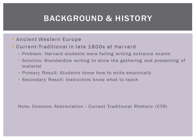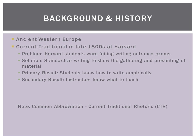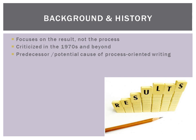While composition theory begins in ancient Western Europe, current traditional theory begins in the late 1800s. It helps to standardize writing, thereby helping instructors know what to teach — so the common five paragraph model emerges. The objective is to produce a finished, effective essay for each student. It was criticized in the 1970s because CTR focuses on the result and not the process, causing other methods to surface.